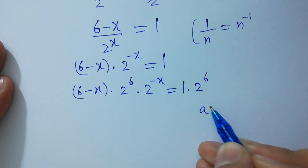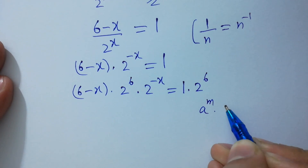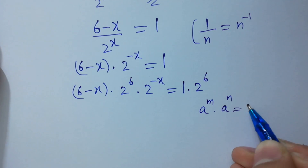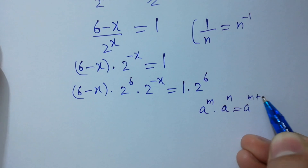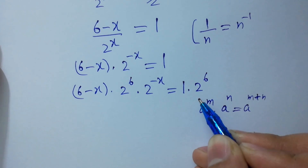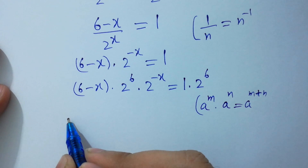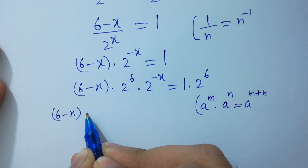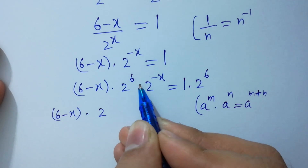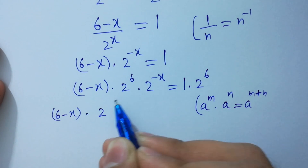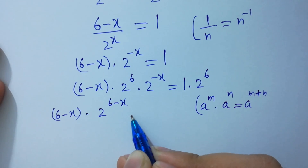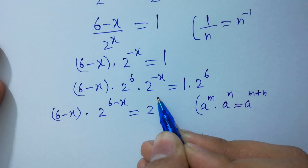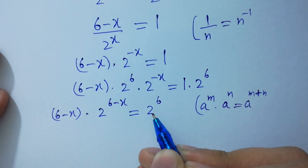Since a to the power m times a to the power n equals a to the power m plus n, we get (6 minus x) times 2 to the power (6 minus x) equals 2 to the power 6.